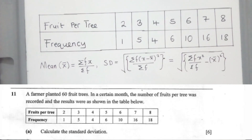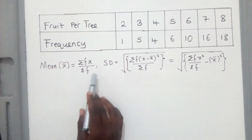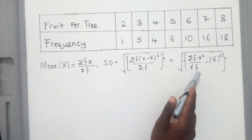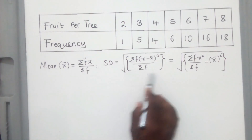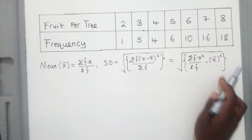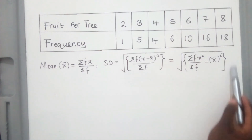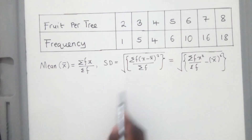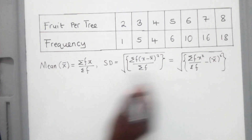Luckily in this paper we are given the formulas to use — this one for standard deviation. Since we want to calculate the standard deviation, we can pick either formula. I like working with this one, which most teachers don't prefer, but this one is the fastest because you don't need to make a table.